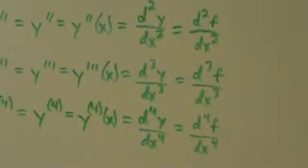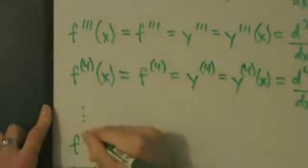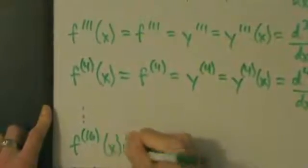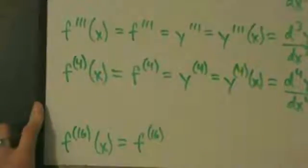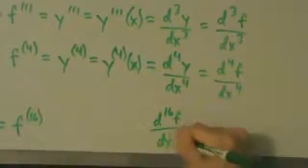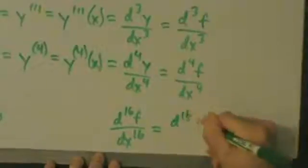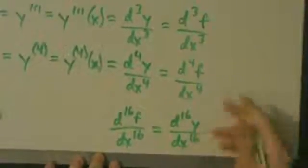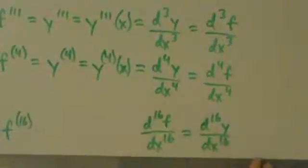This same pattern continues. If you wanted to take the sixteenth derivative of f, that would be f with (16) in the exponent, then x — so f⁽¹⁶⁾(x). In dy/dx notation it would be d¹⁶f/dx to the sixteenth, or d¹⁶y/dx to the sixteenth. This kind of pattern just keeps going.